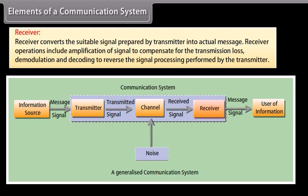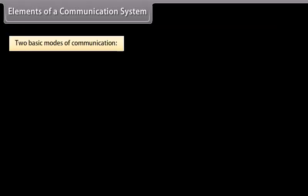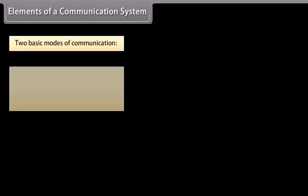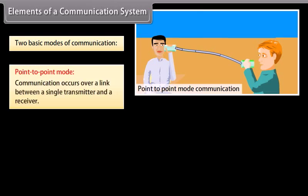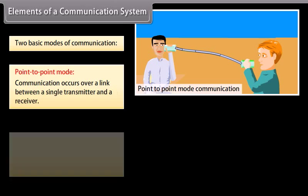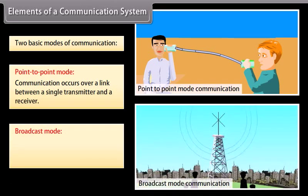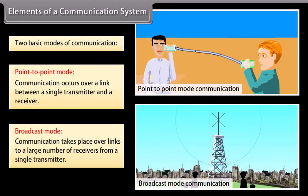Receiver operations include amplification of the signal to compensate for transmission loss, demodulation, and decoding to reverse the signal processing performed by the transmitter. Two basic modes of communication: Point-to-point mode, where communication occurs over a link between a single transmitter and a receiver. Broadcast mode, where communication takes place over links to a large number of receivers from a single transmitter.